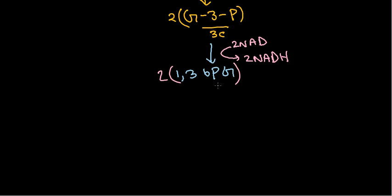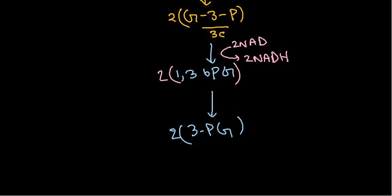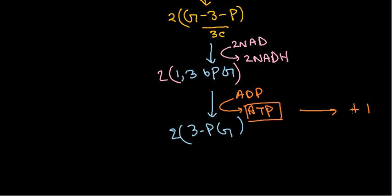The 1,3-bisphosphoglycerate is a very energetic molecule — any intermediate with phosphate groups attached tends to be energetic, like ATP, 1,3-BPG, or phosphoenolpyruvate. Because it is energetic, it needs to release that energy. It is converted into 3-phosphoglycerate, releasing one phosphate group which is transferred to ADP to produce ATP. So we get plus one ATP here — and twice overall since everything is doubled.